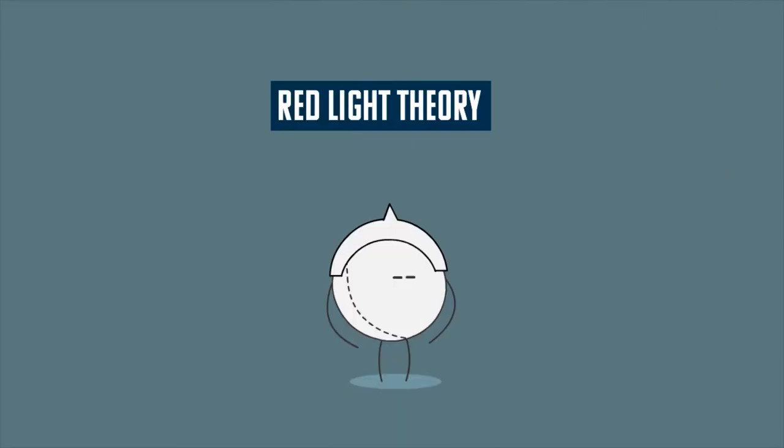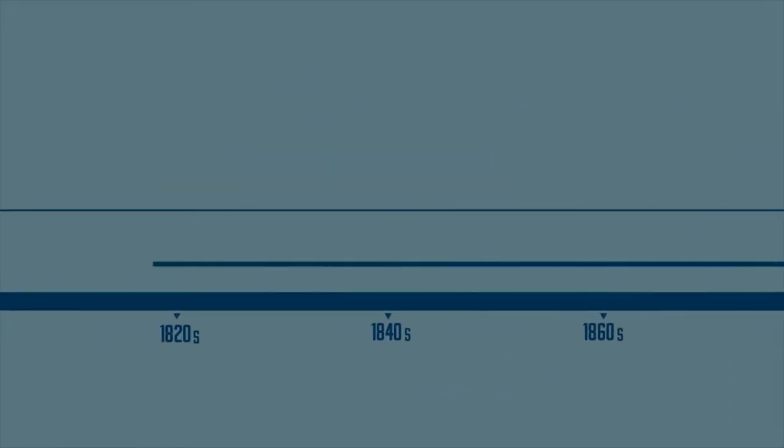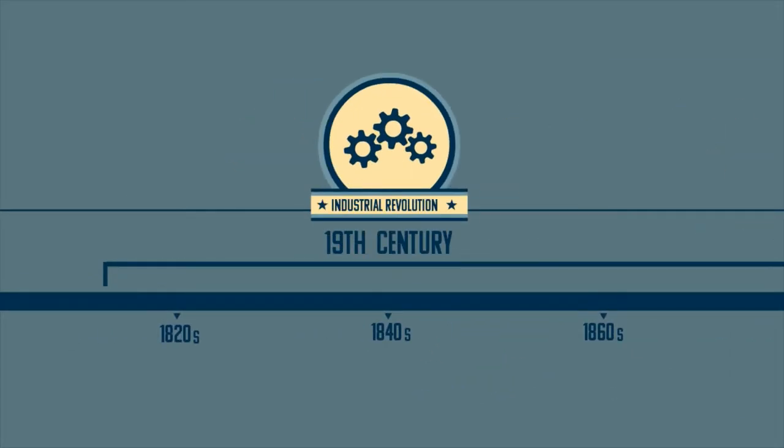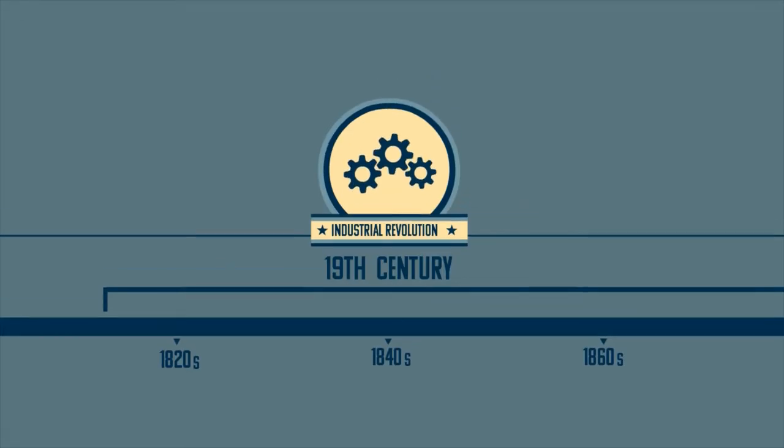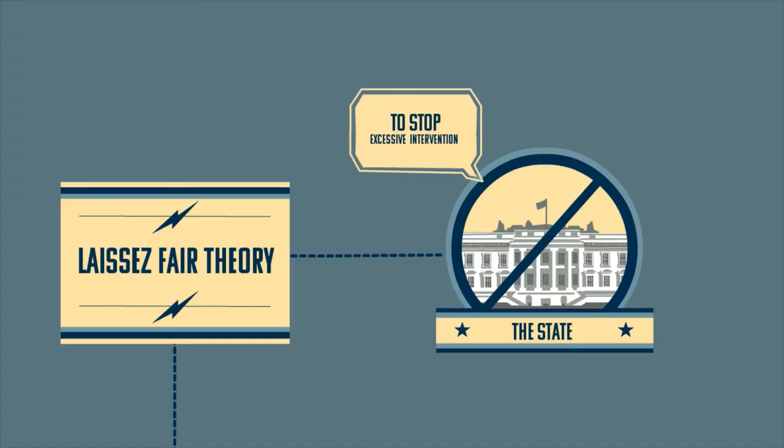Red Light Theory originated from a political tradition of the 19th century during the Industrial Revolution. This era advocated the laissez-faire theory to minimize or stop excessive intervention by the government or state.